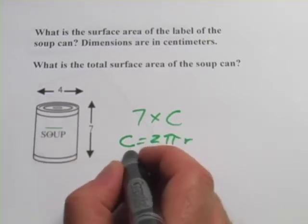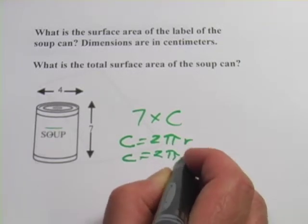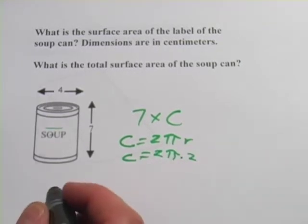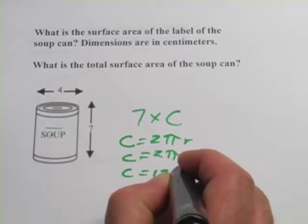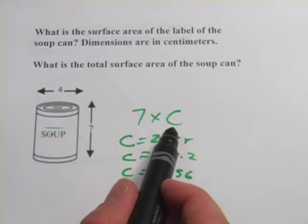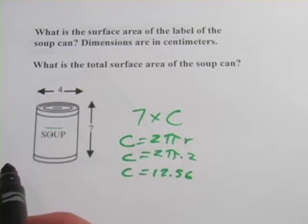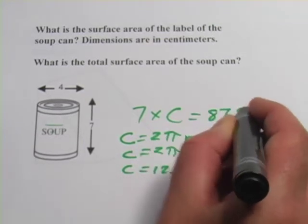So this is going to be circumference equals 2 times pi times 2, or 4 times pi. And let's punch that in the calculator. And I get 12.56. So if I put that back up here, 7 times 12.56 equals 87.92.